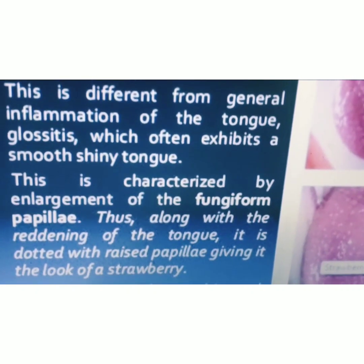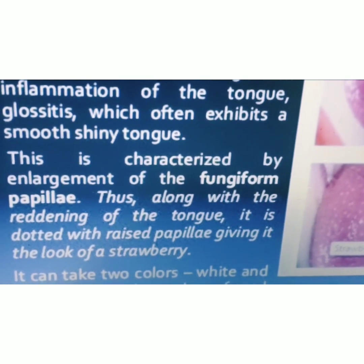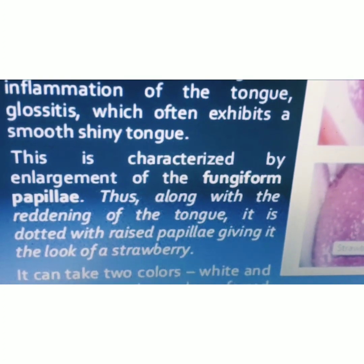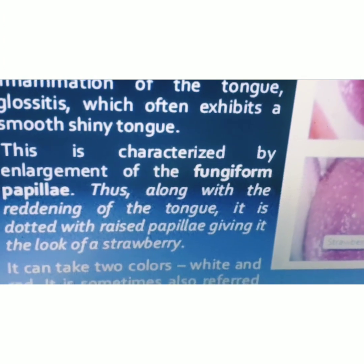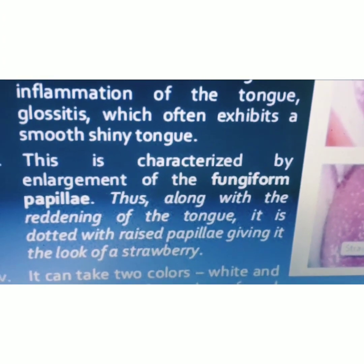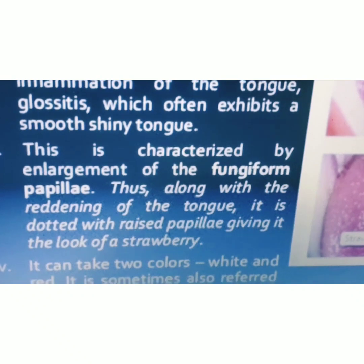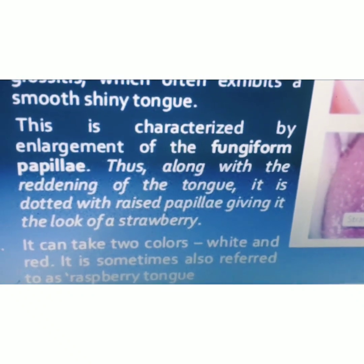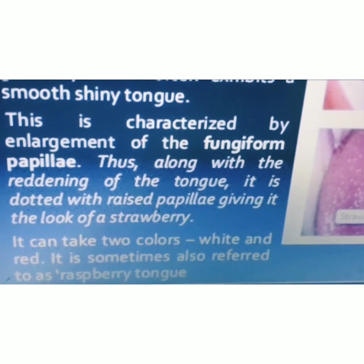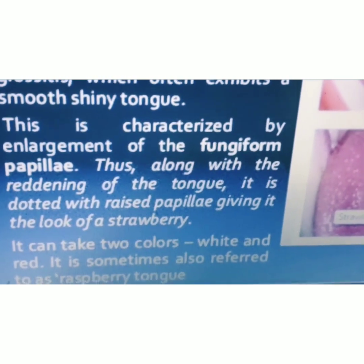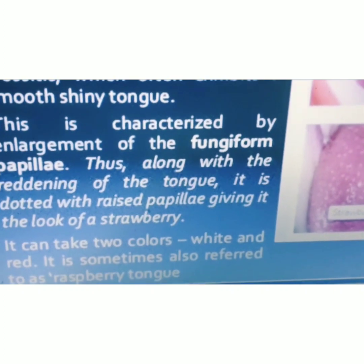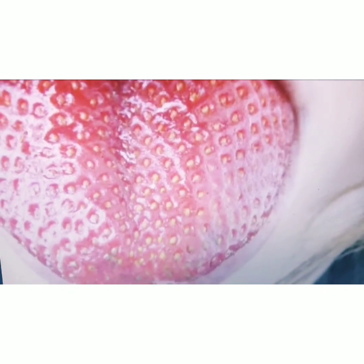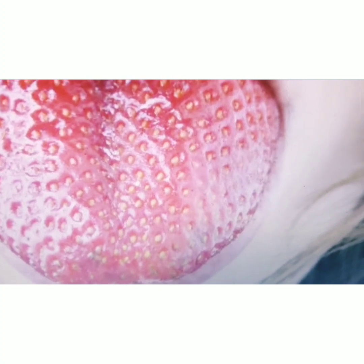The papilla that is enlarged is the fungiform papilla. Along with the reddening of the tongue, there is enlargement of the fungiform papilla. The tongue may appear in two colors — either white or red. Now look at the picture representing strawberry tongue, in which the fungiform papilla is enlarged.